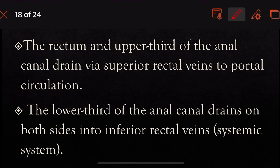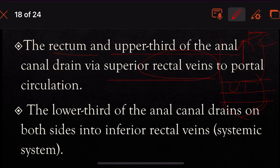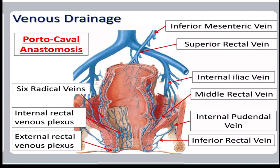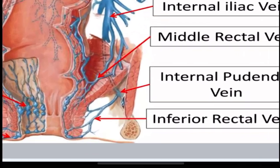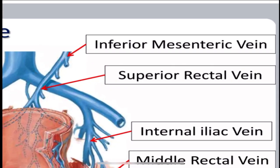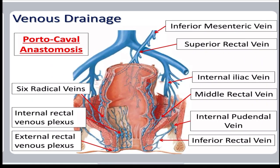For venous drainage, the rectum and the upper third of the anal canal are drained by the superior rectal veins, which drain into the portal circulation. The lower third of the anal canal drains into the inferior rectal veins. The middle rectal vein and superior rectal vein are all part of the portal-caval anastomosis.